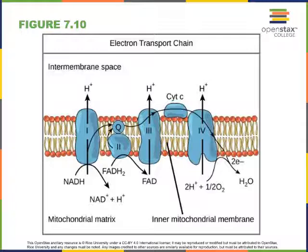The function of complex 1 is to oxidize NADH and reduce ubiquinone. Ubiquinone is shown in the diagram as the letter Q. Ubiquinone is a lipid soluble chemical that can diffuse through the membrane. When ubiquinone is reduced it forms ubiquinol, which is often shown as QH2.